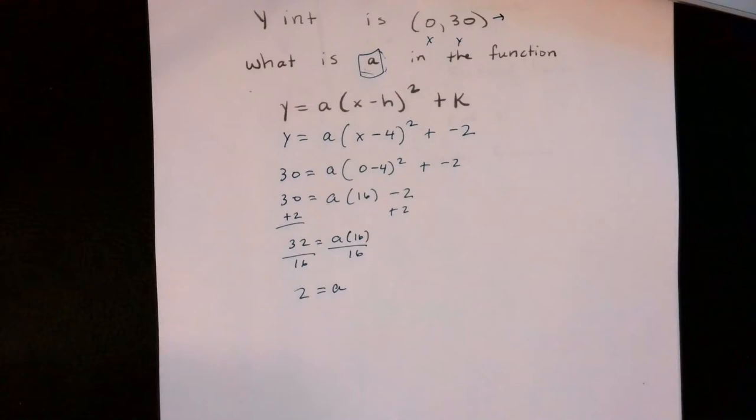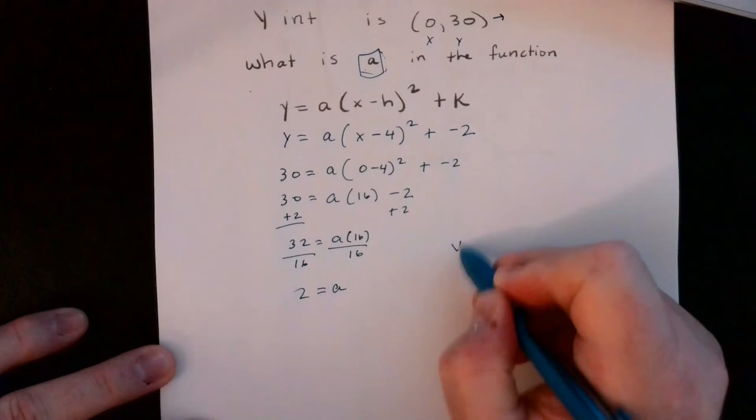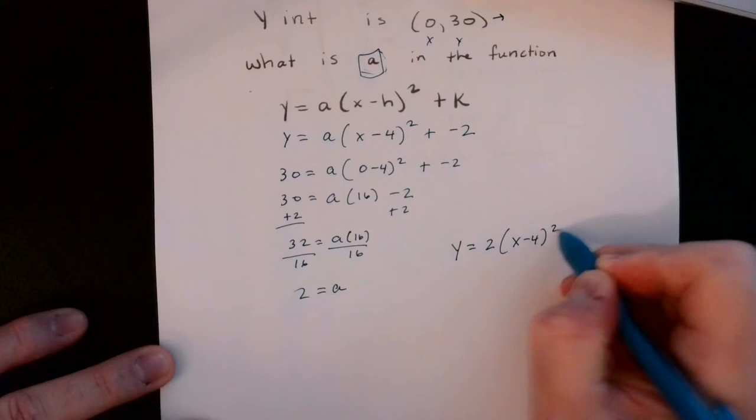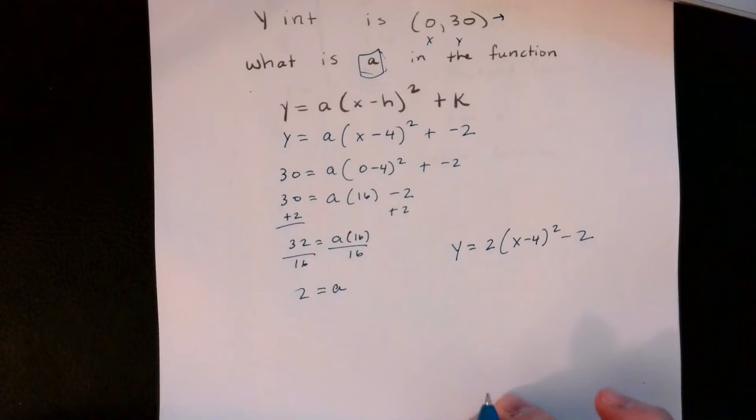You could be asked what a is, or what the full function is. The full function would be y equals 2 times (x minus 4) squared minus 2. That's a generic problem you'll see in your assignment and quiz, so pay attention to that process.